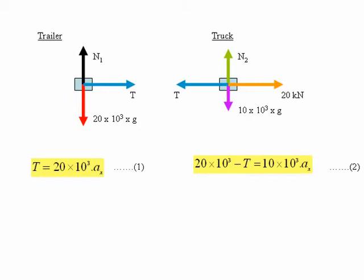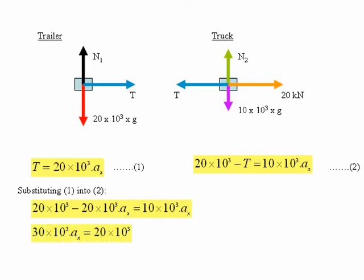Both the truck and the trailer will have the same acceleration Ax, so we can substitute equation 1 into equation 2, which gives us this expression, which we can then simplify. And that finally gives us the value for the acceleration Ax is equal to 0.66 meters per second squared.